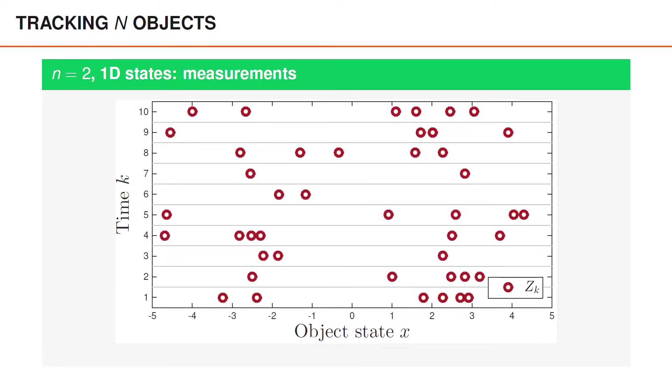So what we have to deal with is more like what is shown here, detections illustrated as red circles. So assuming that we know that there are two objects we have to process these measurements and estimate the object states.